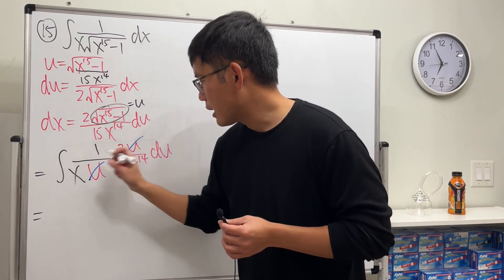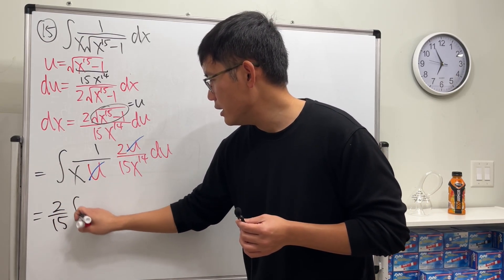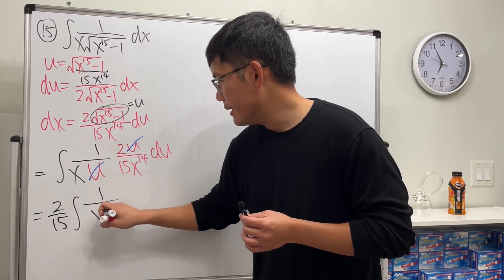The u and u cancel, good. x times x to the 14 is x to the 15. That's good. And let's put on the constant all the way to the front, so 2 over 15 integral 1 over x to the 15 in the u world.